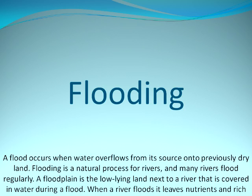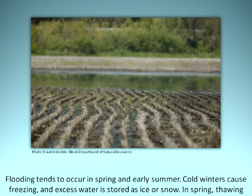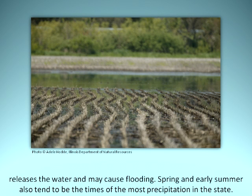Flooding: A flood occurs when water overflows from its source onto previously dry land. Flooding is a natural process for rivers, and many rivers flood regularly. A floodplain is the low-lying land next to a river that is covered in water during a flood. When a river floods, it leaves nutrients and rich sediments in its floodplain, increasing the productivity of the land. A floodplain can contain 1,000 times more species than the river itself and can be a very profitable area for agriculture due to its nutrient-rich soil. Flooding tends to occur in spring and early summer, as cold winters cause freezing and excess water stored as ice or snow is released in spring, possibly causing flooding.